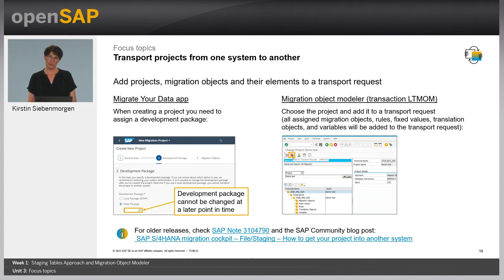In your Migrate Your Data app, when you create a project you need to choose a development package — this cannot be changed later. You can add your migration project to a transport request in the Migration Object Modeler. I added a link to further information and a community blog post explaining how the transfer between different systems works, especially if you have an older SAP S4HANA release.